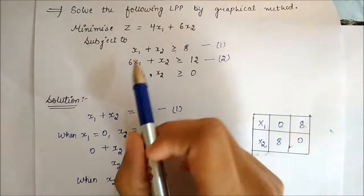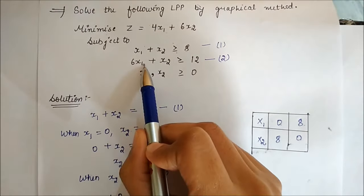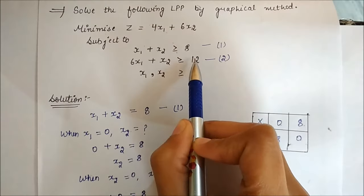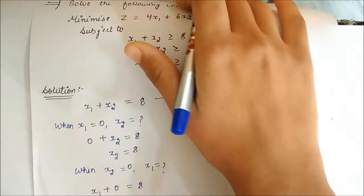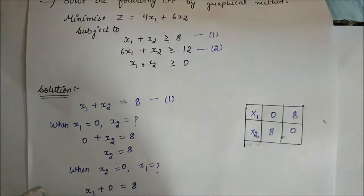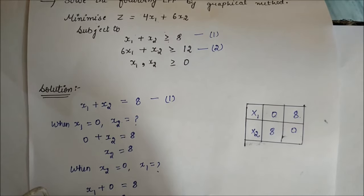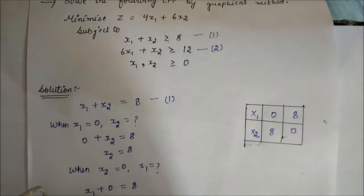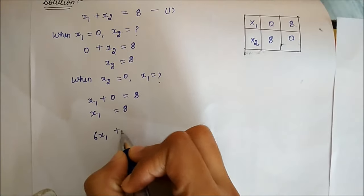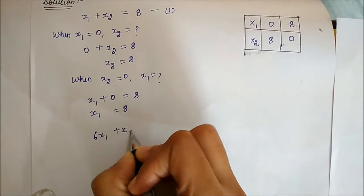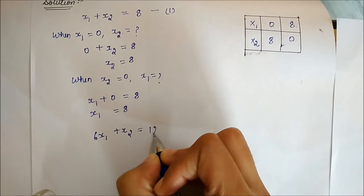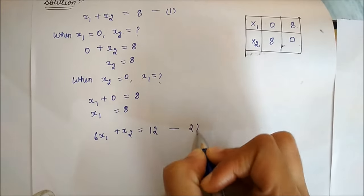The second equation is 6x1 plus x2 greater than or equal to 12. We convert it to: 6x1 plus x2 equals 12. This is the second equation.